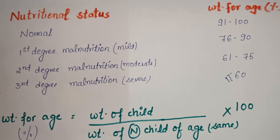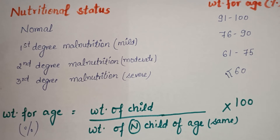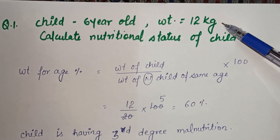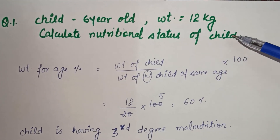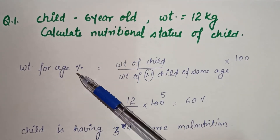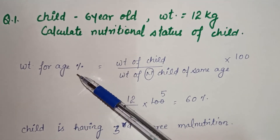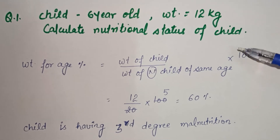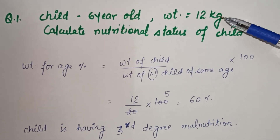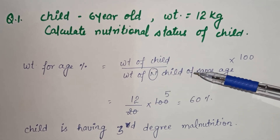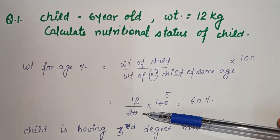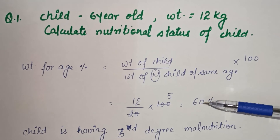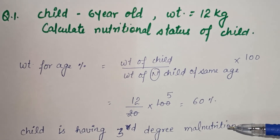Let's look at an example. A child is six years old and weighs 12 kg. We calculate weight-for-age percentage: 12 kg divided by 20 kg (the approximate normal weight for a six-year-old), multiplied by 100, equals 60 percent. This means the child has third degree or severe malnutrition.